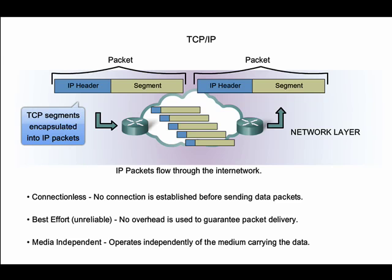It is connectionless, provides best effort delivery, and is media independent. Connectionless means that no connection is established between the source and destination before sending data packets. Best effort delivery means that IP does not guarantee packet delivery, so it is possible that a packet may be lost in transmission. It is the job of the transport layer to guarantee delivery. Media independent means that IP operates independently of the medium carrying the data and can be used with many different media.